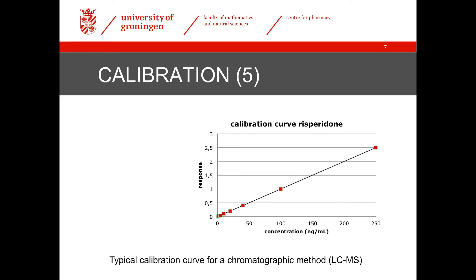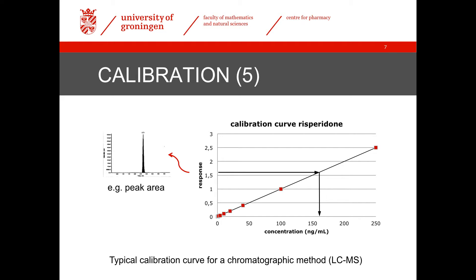The response of the calibrators is measured and plotted as a function of the concentration. For LC-MS, this typically gives a straight line. If a study sample is now measured, it will also give a response, and the concentration of this sample is determined by comparing it to the response of the calibration curve. A response can be several things, but for chromatographic methods such as LC-MS, it is usually the area or peak height that corresponds to the analyte.